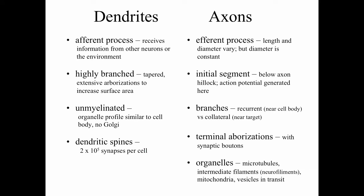Dendrites are essentially afferent processes on neurons — they receive information from other neurons or from the environment. Dendrites can be highly branched, tapered, and show very extensive arborizations to increase surface area. Dendrites are unmyelinated. The organelle profile in dendrites is similar to that of the cell body, except that you don't find Golgi within dendrites. Dendritic spines are structures that allow large numbers of synapses onto individual neurons.